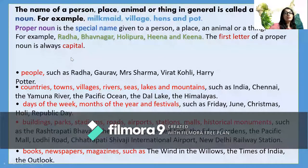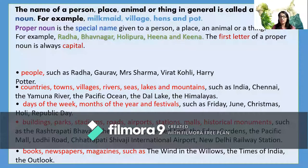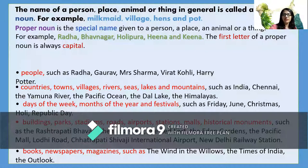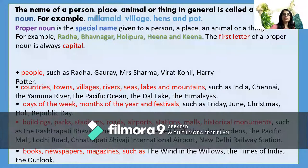Now, what is a proper noun? Proper nouns are special names, as I told you earlier. These are the special names we give to a person, place, animal, or thing. Examples are: Radha, Bhavanagar, Holipura, Hina, Kina — these are all names. The thing you have to take care of is that the first letter of a proper noun is always capital.